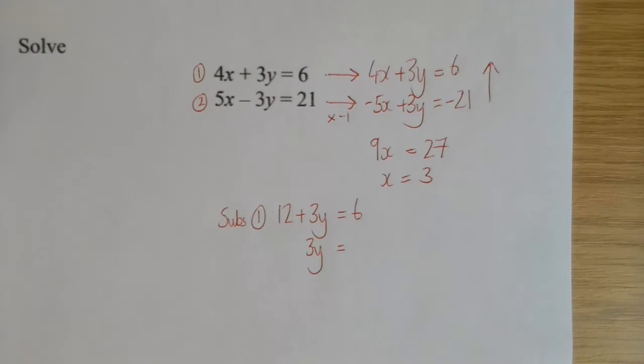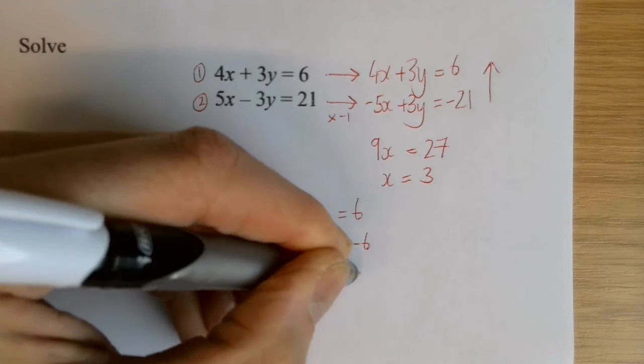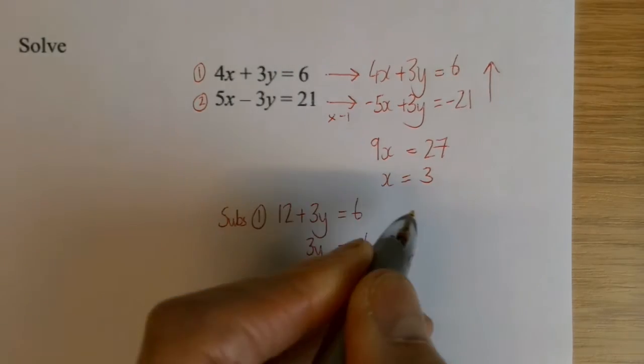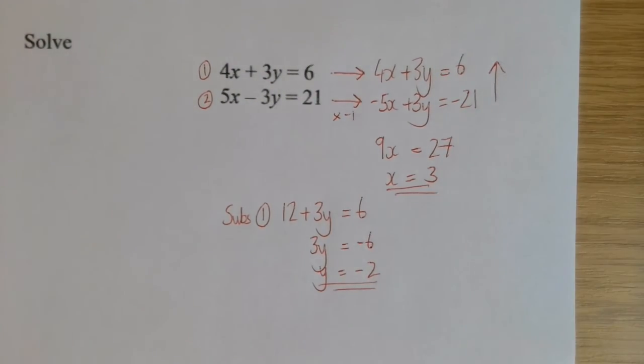I know that the opposite of adding 12 is taking away 12. So y is minus 2. So my solution is x is 3, y is minus 2.